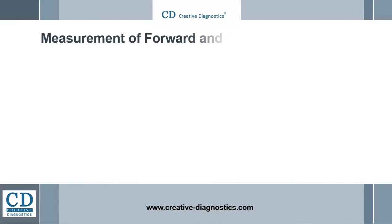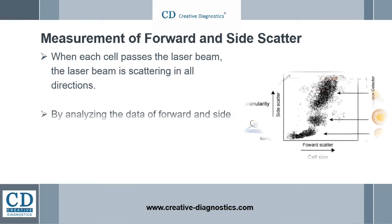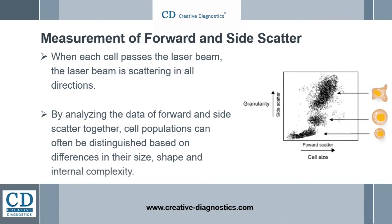When each cell passes the laser beam, the laser beam is scattered in all directions. The flow cytometer detects scatter in the forward direction, called forward scatter, and light in the sideways direction, called side scatter. Forward scatter is proportional to the size of the cell, while side scatter is proportional to the granularity of the cell. By analyzing forward and side scatter data together, cell populations can often be distinguished based on differences in their size, shape, and internal complexity.